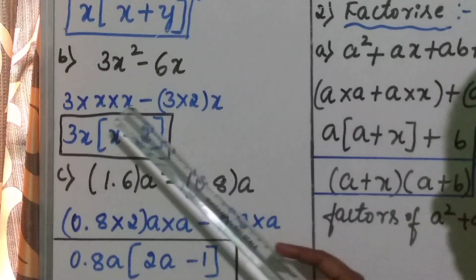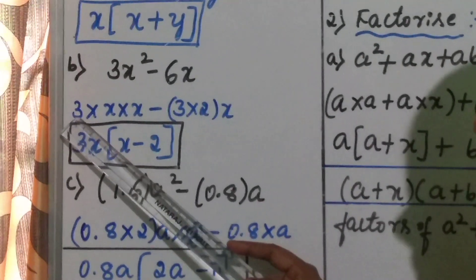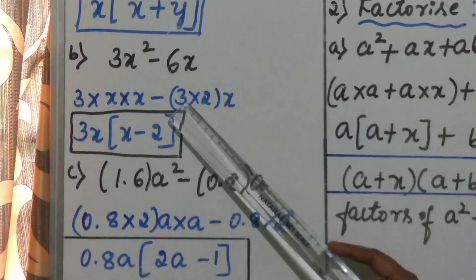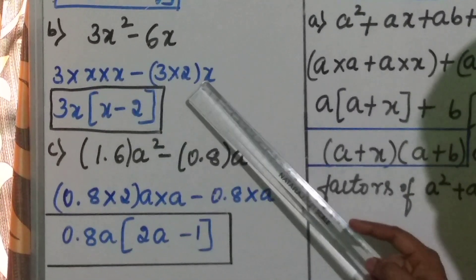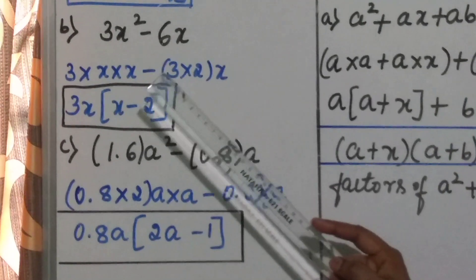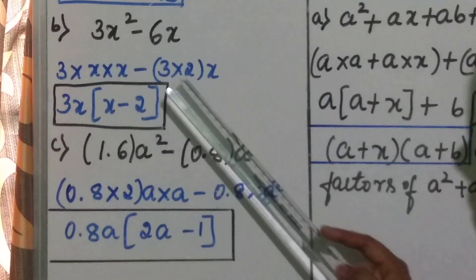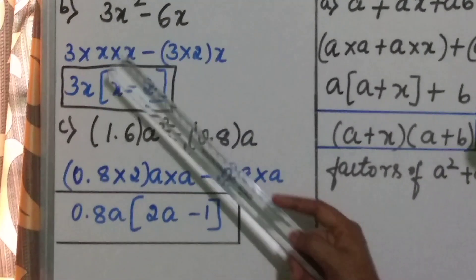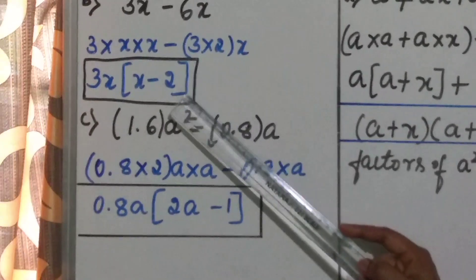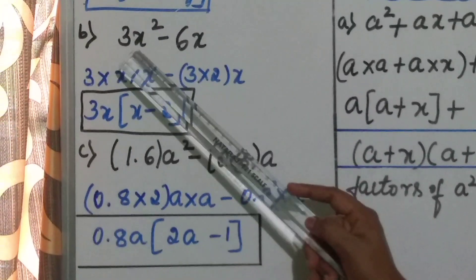Now observe carefully children — which is the common term in both the first and second terms? The constant 3 is there in the first term, and 3 is there in the second term also. And the variable x is common in both terms. Therefore 3x is a common factor. Taking 3x outside the bracket, the remaining terms are x minus 2. Therefore 3x into x minus 2 are the factors of the given algebraic expression.